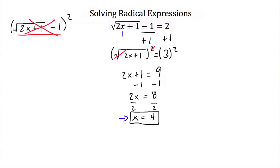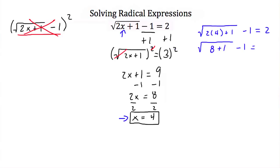Plugging x = 4 back into the original equation: the square root of 2 times 4 plus 1, minus 1, should equal 2. Now 2 times 4 is 8, so this is the square root of 8 plus 1, minus 1. 8 plus 1 is 9, so we have the square root of 9 minus 1. The square root of 9 is 3, so 3 minus 1 is 2, and 2 equals 2 — x = 4 is a valid solution.